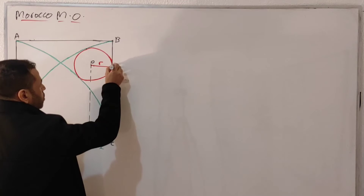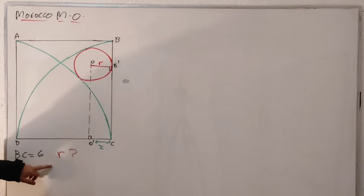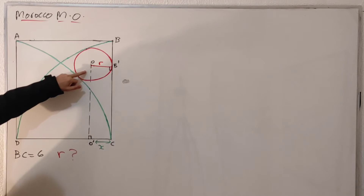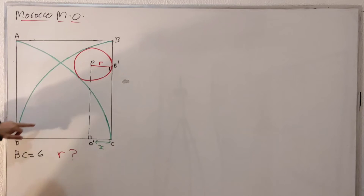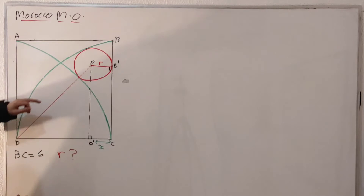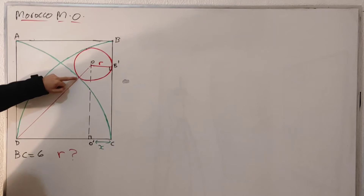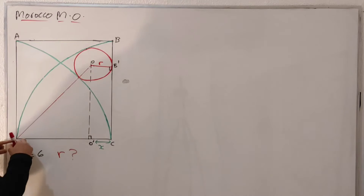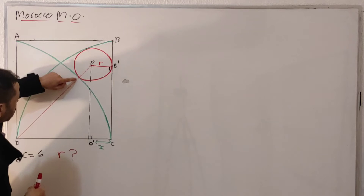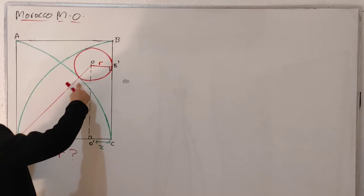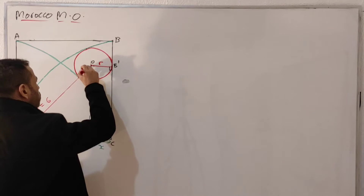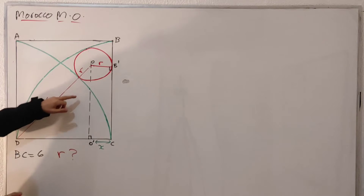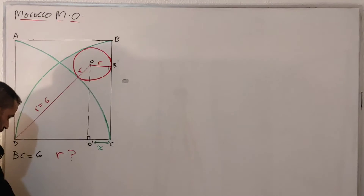Let's call this point B prime. To calculate r, I'm going to draw a line from point O to point D. The distance from O through the tangent point to D is a radius of the big circle, which is six. We also have distance r as the radius of the small circle. Now I'm going to apply the Pythagorean theorem on the right triangle O-D-O prime.